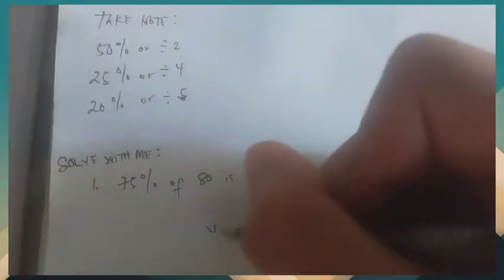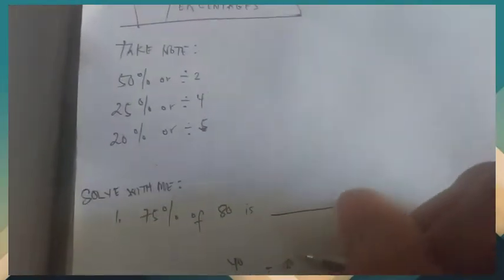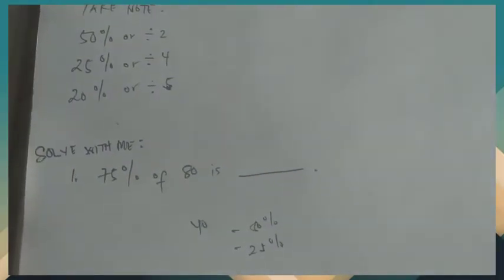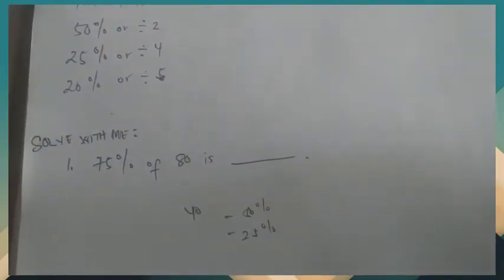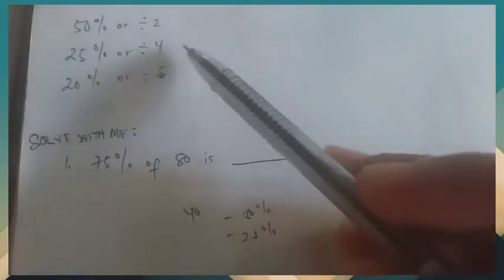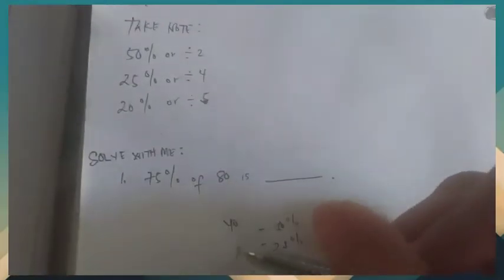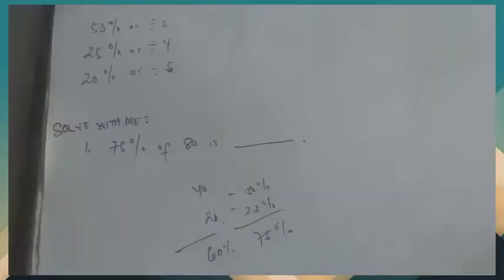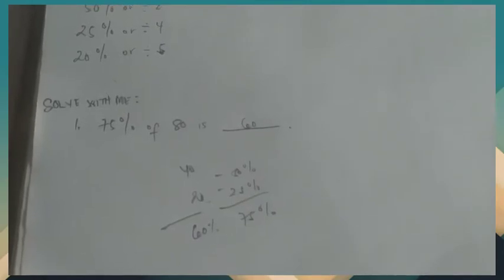50% is 40. Now we need 75%, so what is 25% of 80? 80 divided by 4 equals 20. So 40 plus 20 equals 60. That's 75% of 80. In that way, we can solve it in the easiest way.